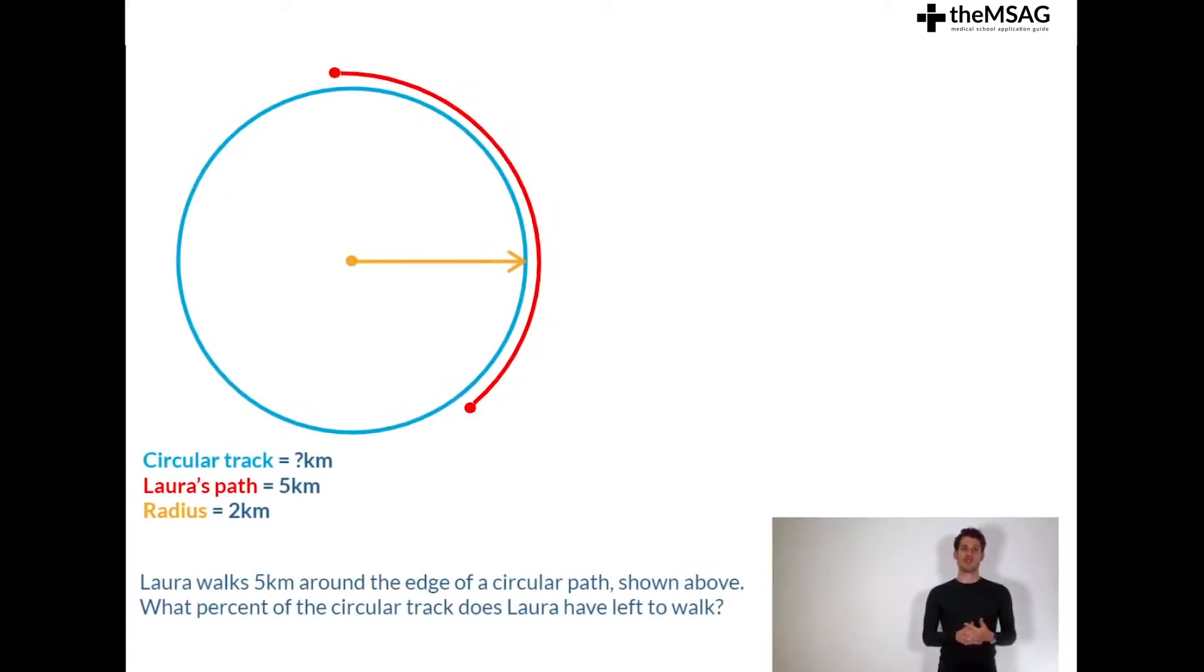So how will the UCAT test this knowledge? Usually with some relatively simple diagrams and a few calculations perhaps mixing in a few percentages or fractions. For example, Laura walks five kilometers around the edge of a circular path shown above. What percent of the circular track does Laura have left to walk?